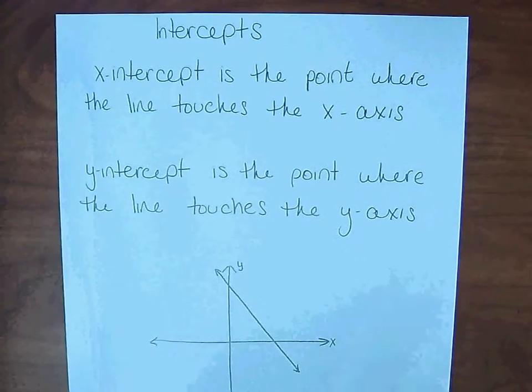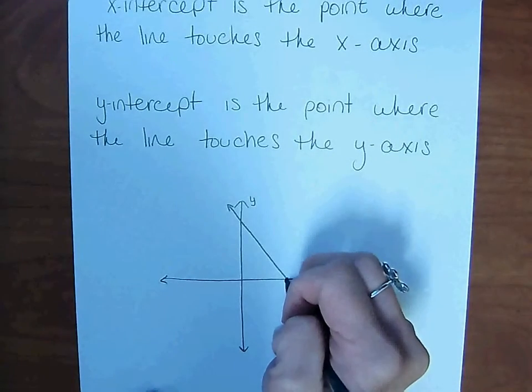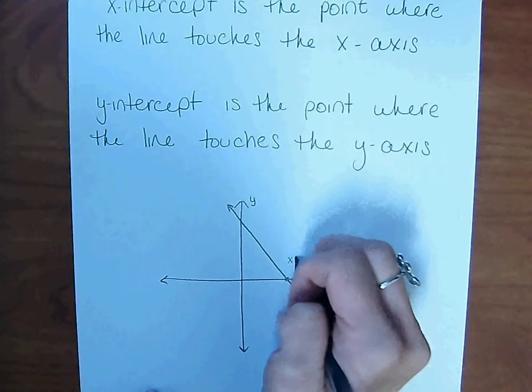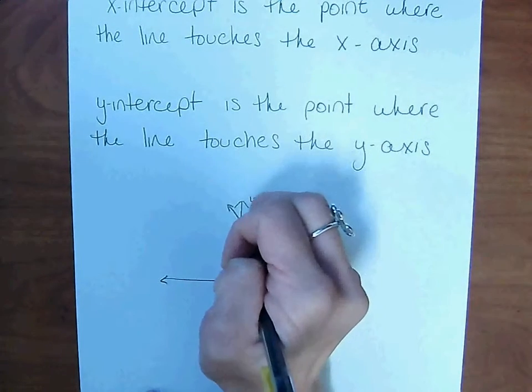So on this graph, this point right here would be the x-intercept. And the one up here is the y-intercept.